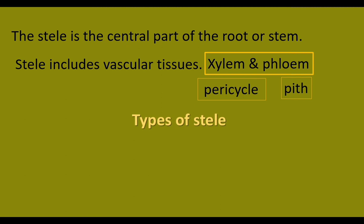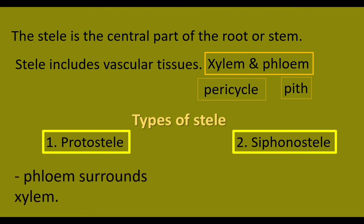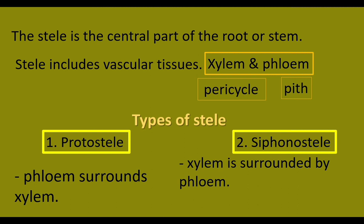Now, let us see the types of stele. There are two major types of stele. The primitive one is protostele. Another one is siphonostele. In protostele, phloem surrounds the xylem. In siphonostele, xylem is surrounded by phloem — phloem forms the outer part — and siphonostele has pith at the center.